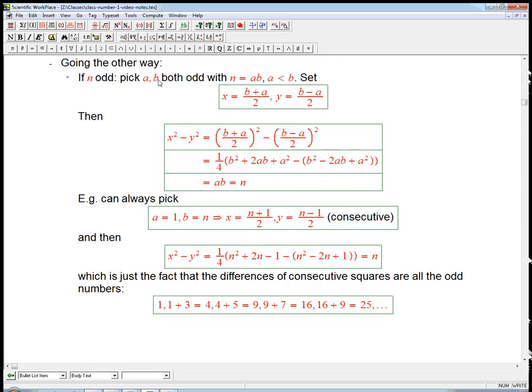And you pick the A and B in the right way. You pick them both to be odd. And then you just kind of undo what we did here. And I'll show it really explicitly. So you pick A and B, both odd, with n as the product of A and B. And let's say A < B so that x and y both turn out to be positive.